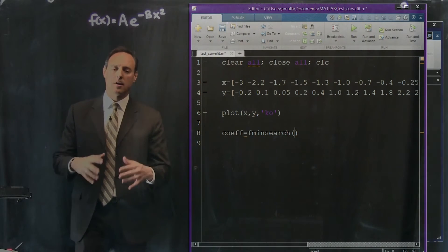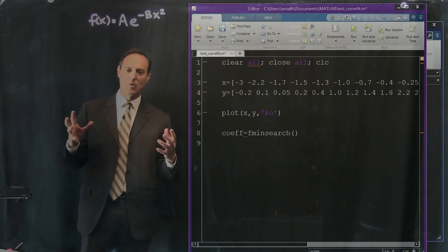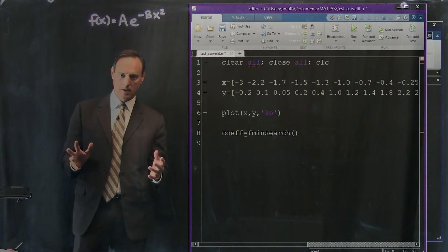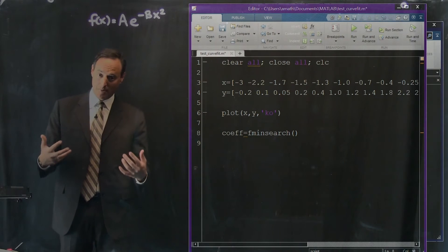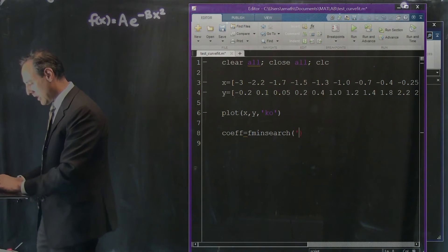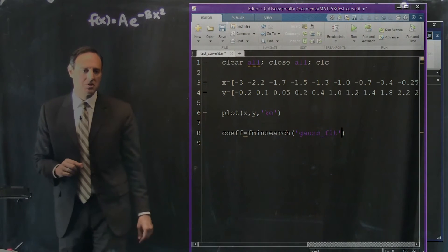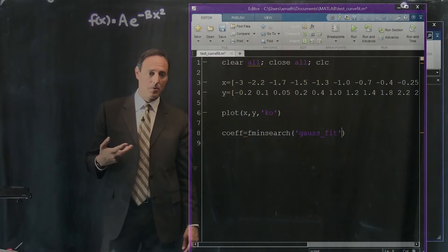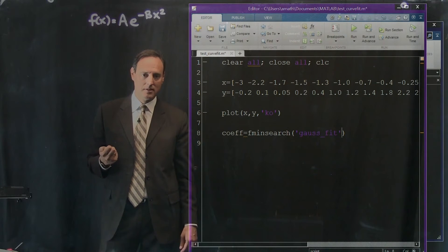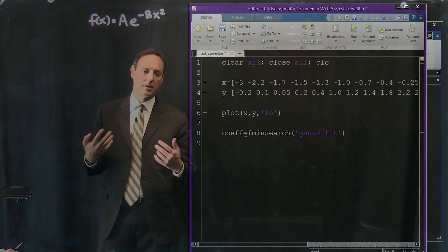fminsearch is going to call on a function and in this function you're going to define what you want minimized. We want to minimize the error so there's going to be a function that's going to have this minimized error. So let's call it gaussfit. So there's going to be some function gaussfit.m that we're going to have to make, and when we make this function up we have to define the error in there that we want minimized.